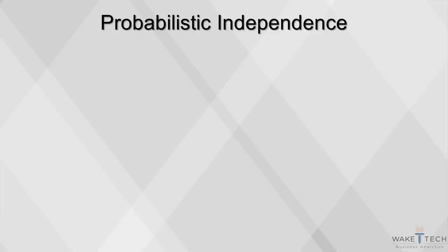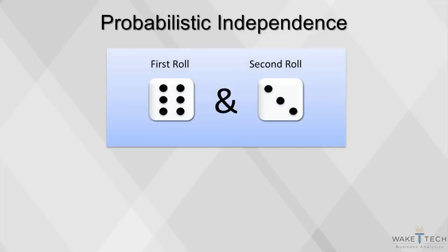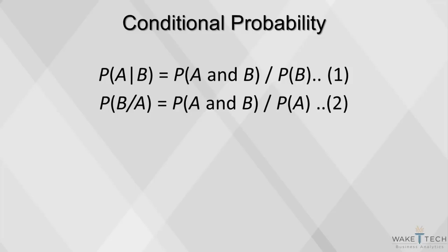If two events are independent — their outcomes aren't affected by each other — then the probability of both a and b occurring is simply the product of the two probabilities. In the case of our die, the probability of getting a 6 on the first roll and getting a 3 on the second roll is 1/6 times 1/6, which equals a 1/36 chance.